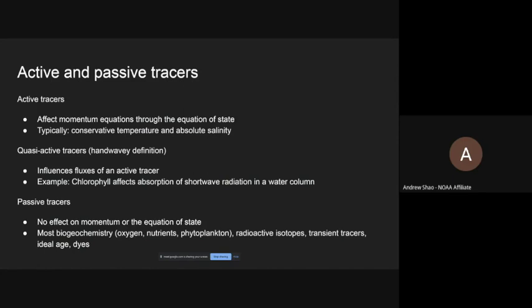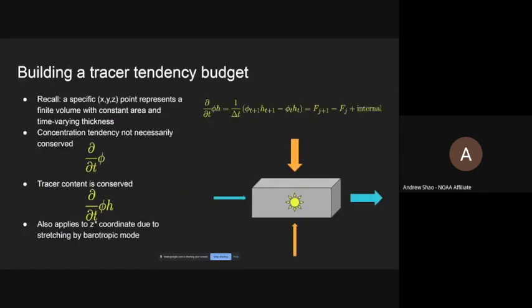Passive tracers are probably the largest class of tracers people think about most of the time, because they include things like biogeochemistry — oxygen, nutrients, and phytoplankton. They also include radioactive isotopes: carbon-14, carbon-13, helium, iodine, cesium — all these radioactive tracers we can use as tracers of the ocean circulation. Then there are transient tracers like CFCs and SF6, and also things like ideal age tracers or dye tracers as Keith mentioned.